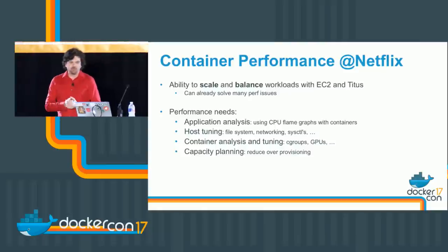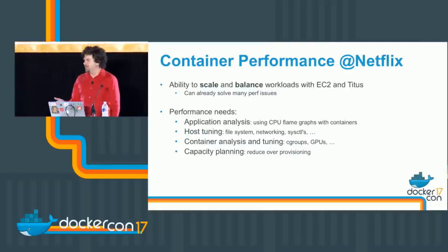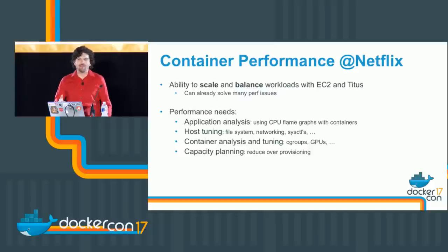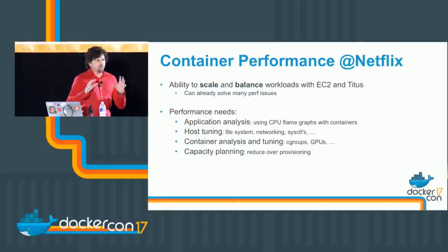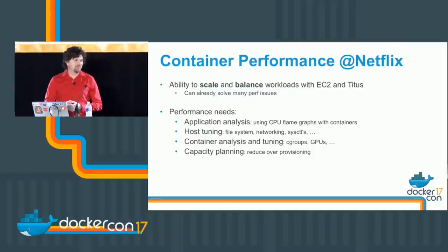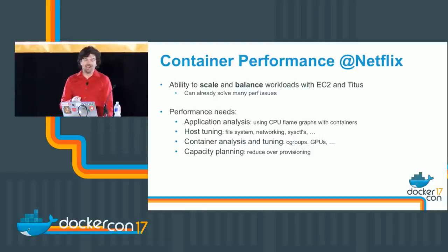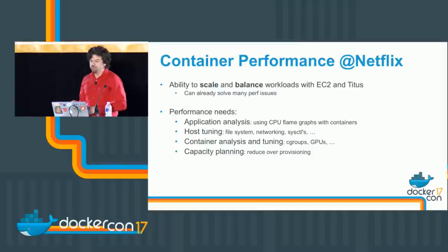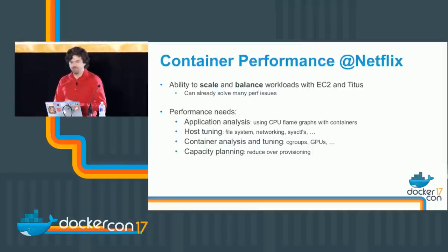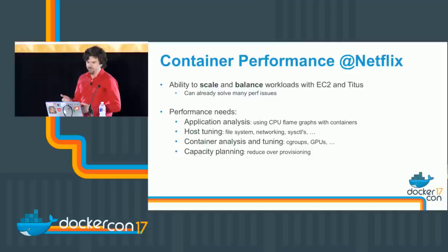Container performance at Netflix — with EC2 and instances, we can scale up very easily, and with Titus we can balance out the workload. So the architecture already solves a lot of performance problems. What we then need to do includes primarily application analysis — how are applications running in containers, can we still analyze them? — as well as host tuning, container analysis and tuning, C-groups, and capacity planning to reduce over-provisioning.